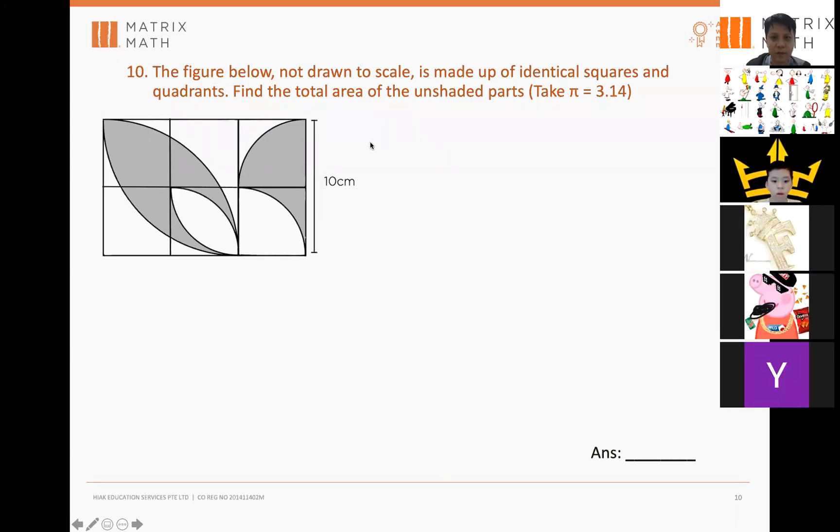So, the figure below is made out of identical squares. You can see six squares and quadrants. So, what are the quadrants? Basically, there are two types of quadrants.